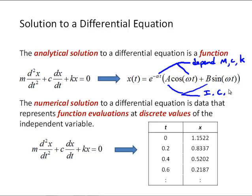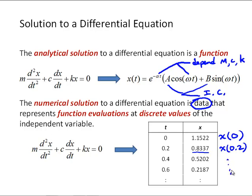When we do a numerical solution to a differential equation, the result is going to be numerical data that represents function evaluations at discrete values of the independent variable. So if we did a numerical simulation of the spring-mass system, we would just get a bunch of numbers — those numbers represent function evaluations. For example, x evaluated at 0, and x evaluated at 0.2 would be 0.8337, and so on.